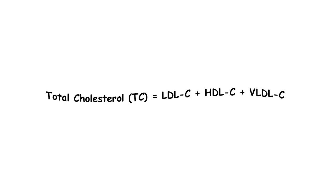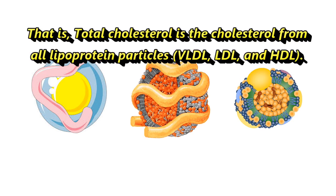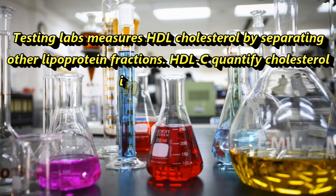Total cholesterol (TC) equals LDL-C plus HDL-C plus VLDL-C — that is, total cholesterol is the cholesterol from all lipoprotein particles: VLDL, LDL, and HDL. Testing labs measure HDL cholesterol by separating other lipoprotein fractions, quantifying the cholesterol specifically in HDL particles.